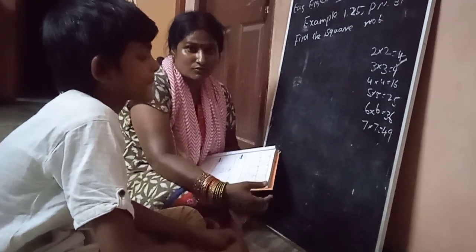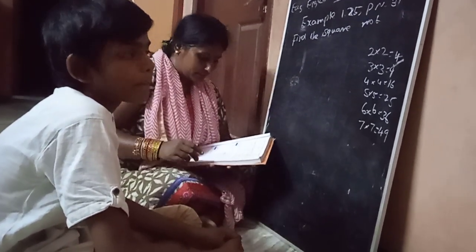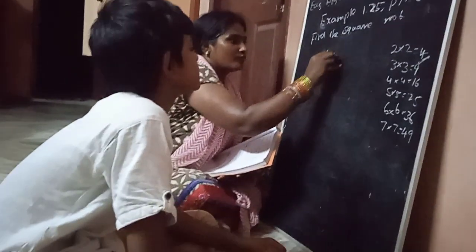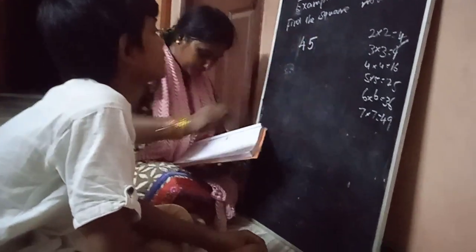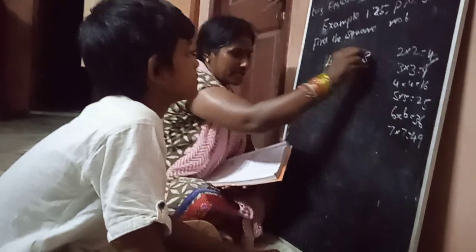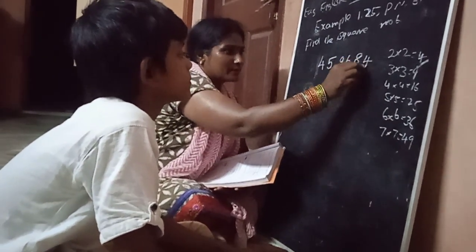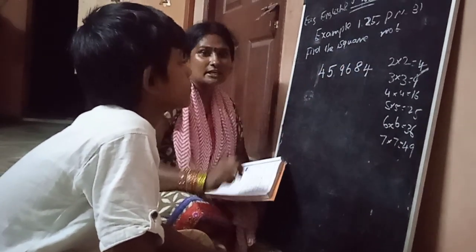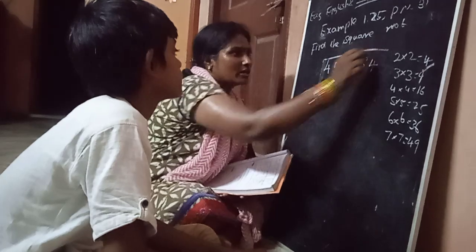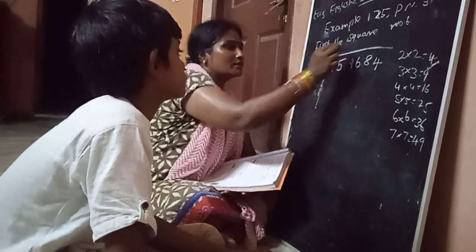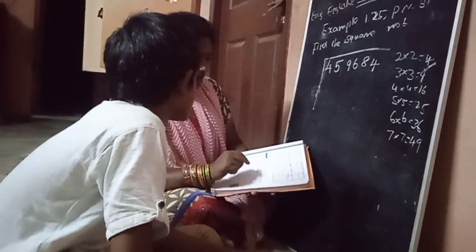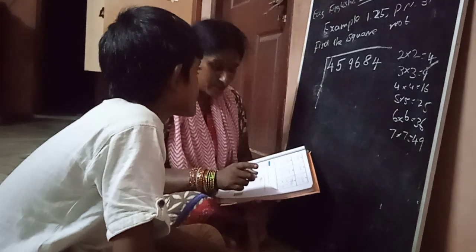This is very beautiful. Let's explain the sum. The number is 4, 5, 9, 6, 8, 4 — that is 459684. This number's square root we will find using the long division method.